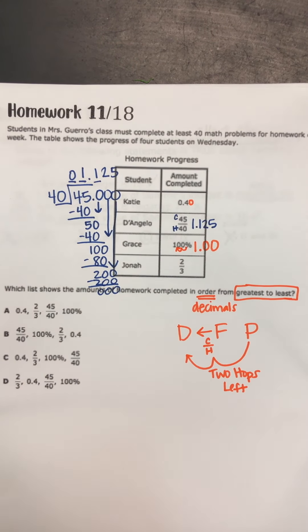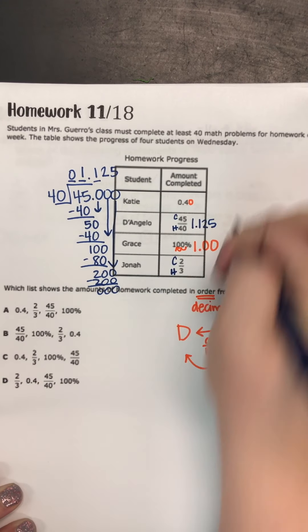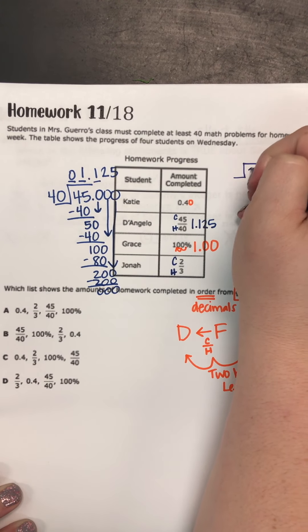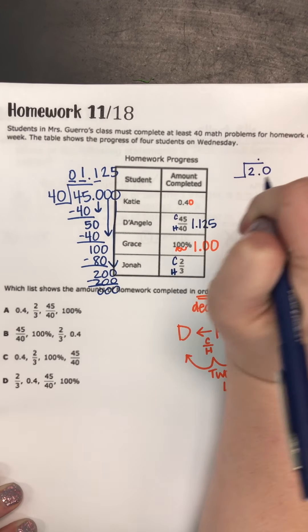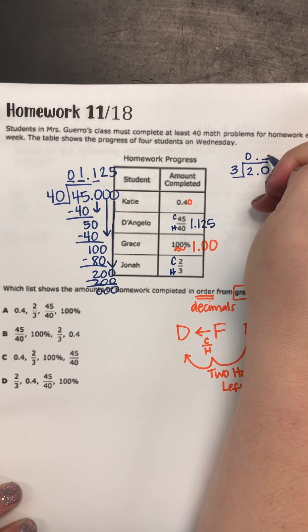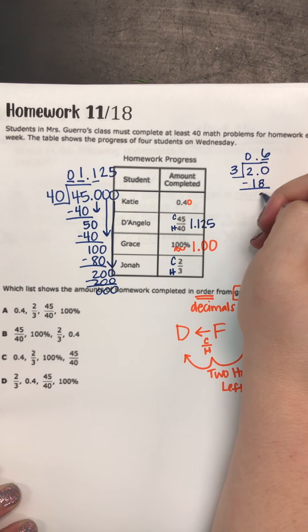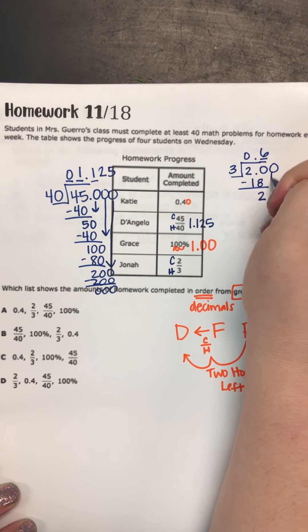And then the last one, two thirds. Maybe some of you guys have that one memorized. If you don't, again, how do we make a fraction into a decimal? We cowboy and horse. So I'll do that one over here. Two is my cowboy. Three is my horse. Three does not go into two, but it does go into 20. Six times. Six times three is 18. 20 minus 18 leaves us two.